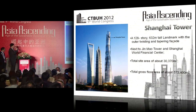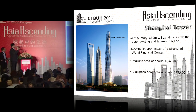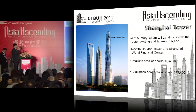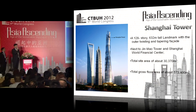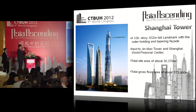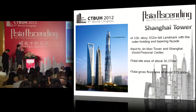Shanghai Tower is located in Lujiazui area, Pudong, Shanghai, which is right adjacent to two other supertall buildings, forming a triangle. The height is 632 meters and it has 128 stories. The entire site area is 30,370 square meters, with a total gross floor area of about 573,000 square meters.